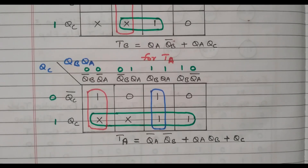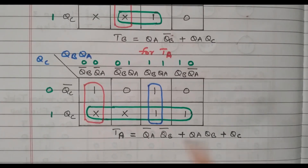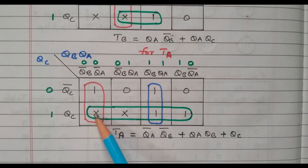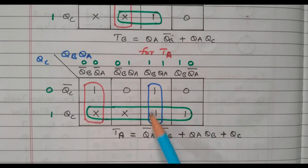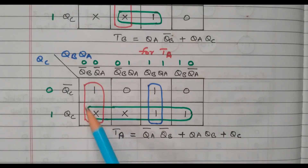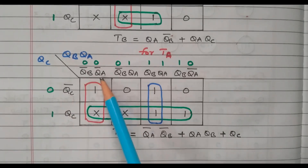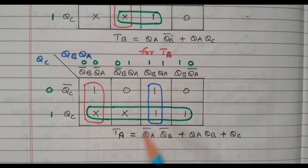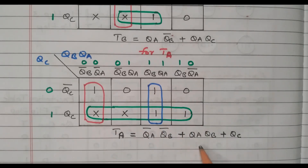For TA, the K-map has four 1s and two don't care conditions. Combining the four cells gives QC-bar. Combining two more cells gives QB-bar·QA-bar, and the last two cells give QB·QA. So the expression for TA = QC-bar + QB-bar·QA-bar + QB·QA.